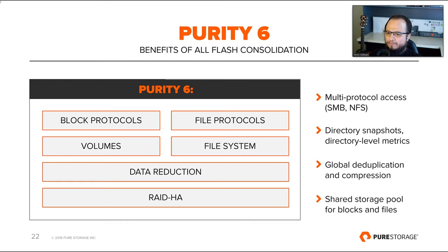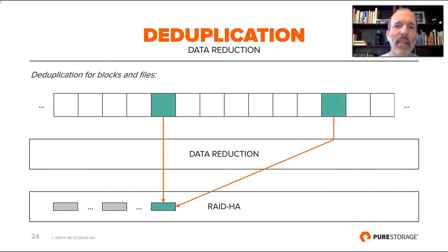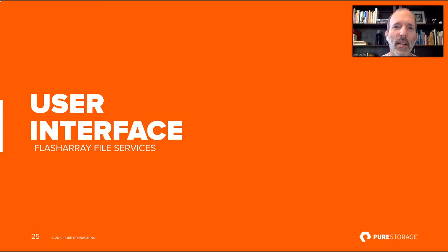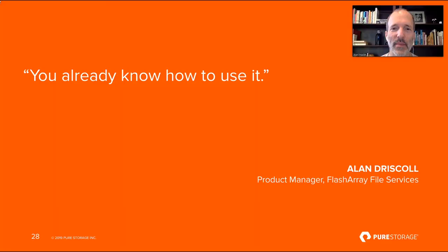Thanks, James. Incoming data is compressed and written out to flash storage with enough parity to reconstruct it even if two drives fail. If the same data is written elsewhere, this simply becomes a second mapping to the same storage. We've also integrated file services into the existing GUI, command line interface, and REST API. New concepts like managed directories and export policies take their place alongside familiar ones, building on what you already know and giving you the simplicity you've come to expect from Pure Storage.